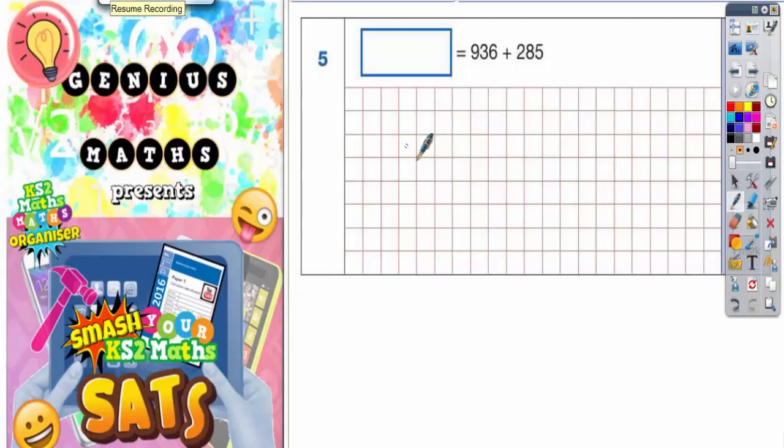Question number five. We've got 936 add 285 and we need to figure out what answer goes in this box. It's unusual to see the answer at the start of the question and then what it's equal to after the equal sign, but it's exactly the same as writing 936 add 285 equals and then the answer box after that.